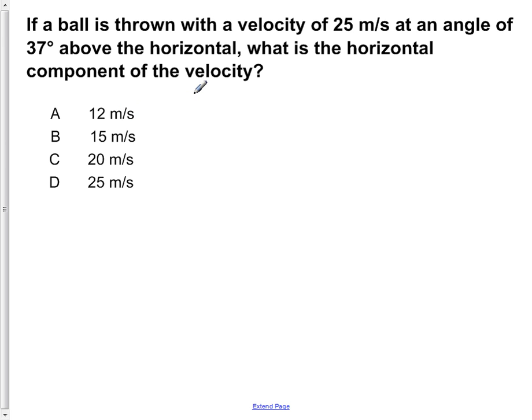If a ball is thrown with a velocity of 25 meters per second at an angle of 37 degrees above the horizontal, what is the horizontal component of the velocity? So the first thing we're going to do is to draw a picture.